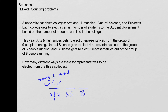For natural science, they're going to get four representatives out of a group of six people who are running, so that's 6C4. And then business is six out of eight, so that's 8C6.